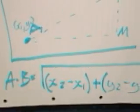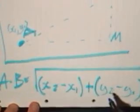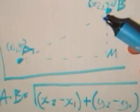If you'd like to write down the equation, the distance from A to B is equal to the x-coordinate of B take away the x-coordinate of A, squared.